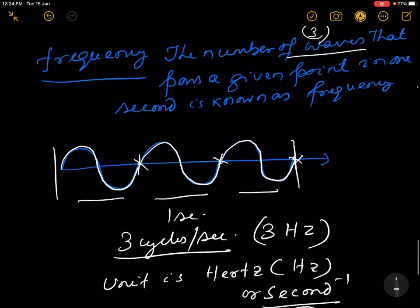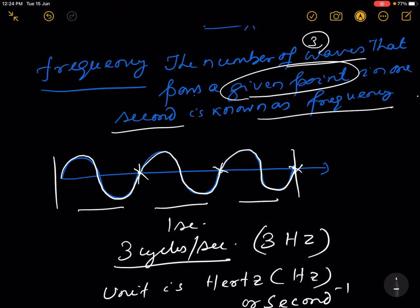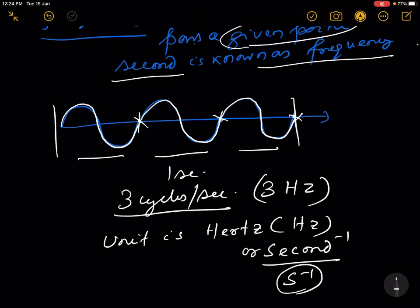The number of waves that pass a given point in one second is known as frequency, and its unit is hertz or second inverse. For example, one cycle passing a given point in one second, and if there are 50 cycles per second, then the frequency will be 50 hertz.